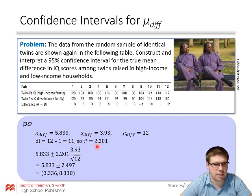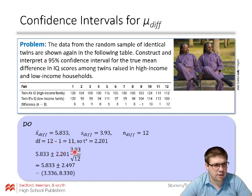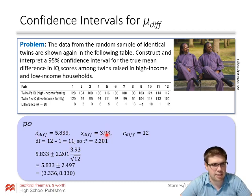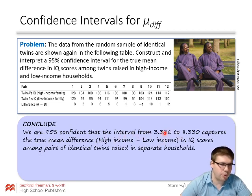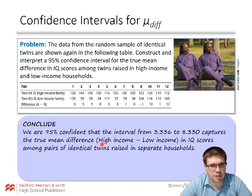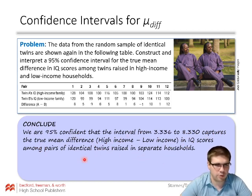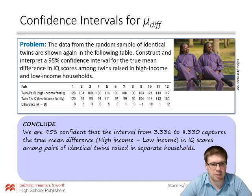Plugging into the formula — X-bar-diff plus or minus t-star times S-diff over the square root of n — we get the confidence interval. We conclude: we are 95% confident that the interval from 3.336 to 8.330 captures the true mean difference, high income minus low income, in IQ scores among pairs of identical twins raised in separate households. Another way of saying that is the high-income twin on average has an IQ score that is from about 3 to 8 points higher. In the next video, we'll come back and look at the significance test.